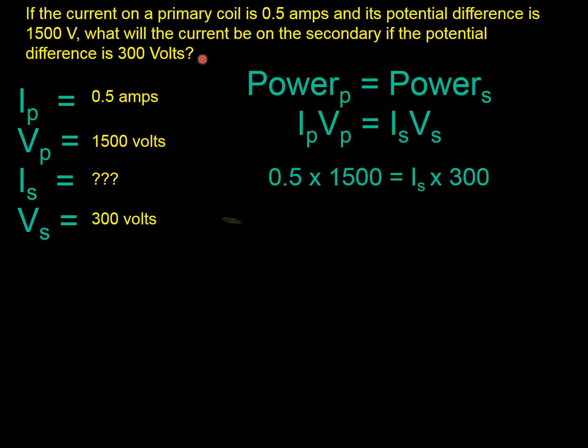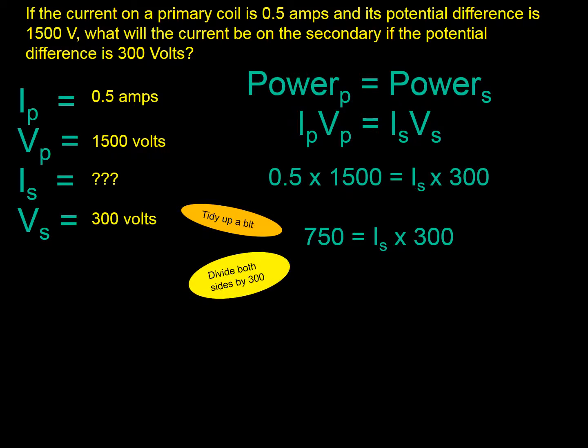OK, best thing, tidy it up. In which case, there we are. It just looks a little bit easier, a little bit easier to deal with. Now, I need to get rid of the 300 on this side. If I divide both sides by 300, we end up like that. And that gives us the current IS, 2.5 amps.